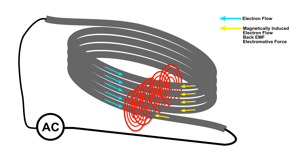And again, when the AC is diminishing, the magnetic field is trying to collapse, which induces a current in the other direction, which again resists the collapse of the magnetic field.